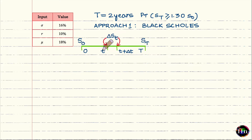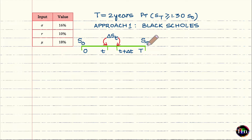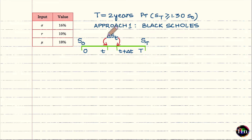Consider a timeline: at time t equals zero the stock price is S-sub-t, which is not known today — it is a random variable. Assume there is a tiny time interval delta-t running from time t to time t plus delta-t, during which the price of the stock changes by an amount delta-S-sub-t.